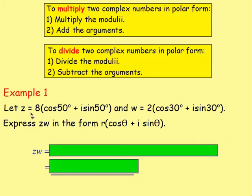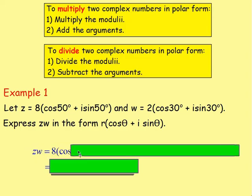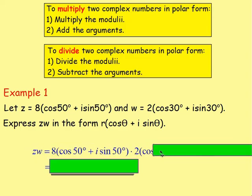Example one: let Z equal 8 bracket cos 50 degrees plus I sine 50 degrees, and W equal 2 bracket cos 30 degrees plus I sine 30 degrees. Express Z times W in the form R bracket cos theta plus I sine theta. So for Z times W, we know we're going to be multiplying these complex numbers together: 8(cos 50 + I sine 50) multiplied by 2(cos 30 + I sine 30).